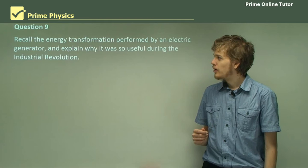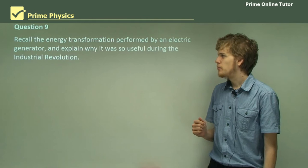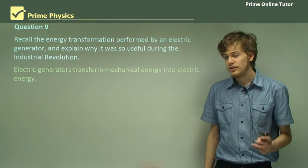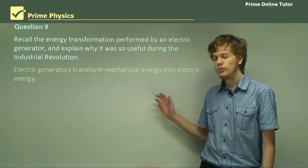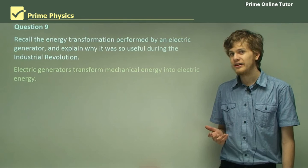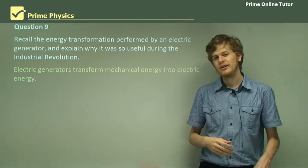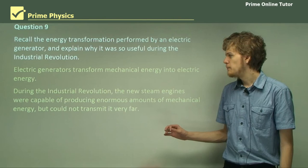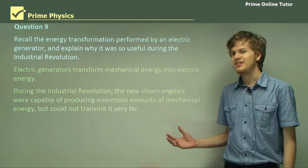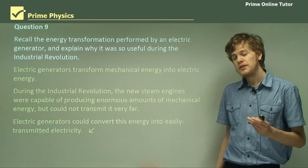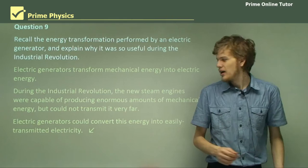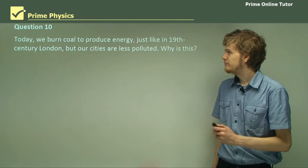Question nine: recall the energy transformation performed by an electric generator, and explain why it was so useful during the Industrial Revolution. Electric generators are able to transform mechanical energy, or kinetic energy, into electrical energy, which is very useful — especially in today's society. But why was it useful during the Industrial Revolution in particular? During the Industrial Revolution, we had large amounts of mechanical energy available. The steam engines could produce enormous amounts of kinetic energy but couldn't transmit it anywhere. The fact that we had generators changed this — we could take these huge amounts of mechanical energy, convert it to huge amounts of electrical energy, and then transmit that electrical energy.